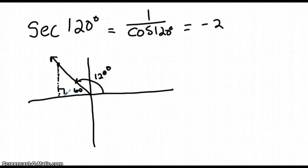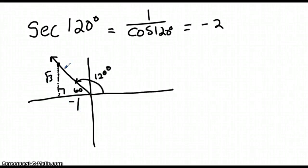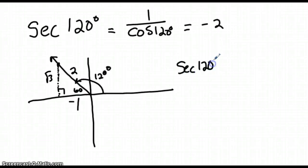That means we have a famous 30-60-90 triangle. For this triangle, the long leg is root 3, the short leg is 1 — but because we're on the negative x-axis, it's negative 1 — and the hypotenuse is 2. Secant is r over x, so the secant of 120 degrees using reference angle 60 degrees is 2 over negative 1, which is negative 2. Same answer.